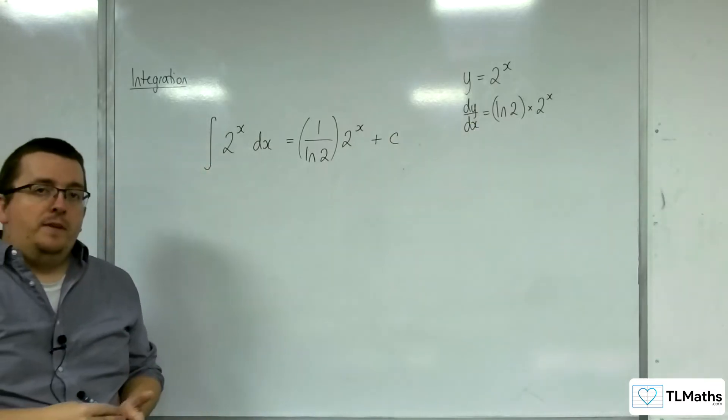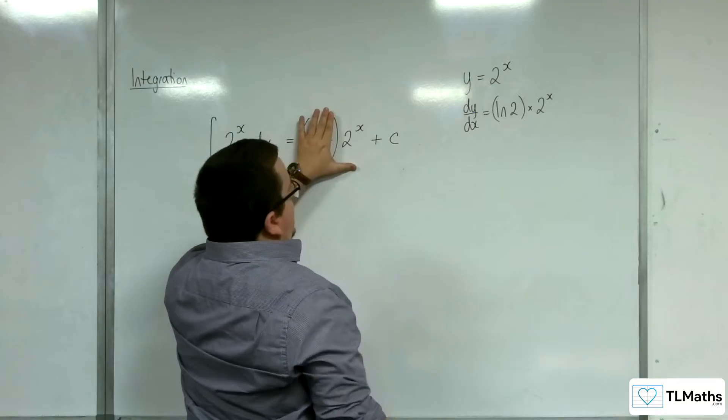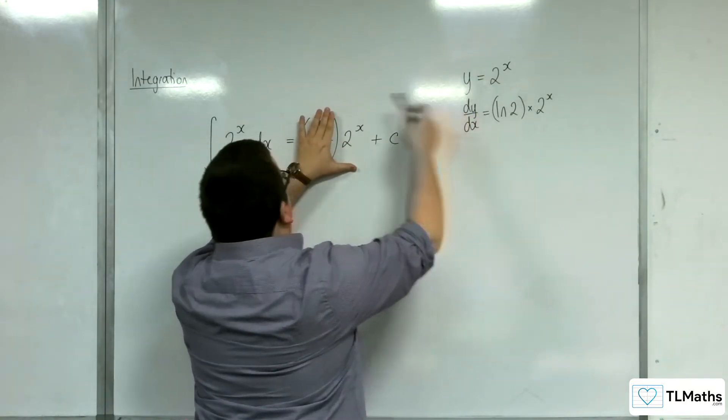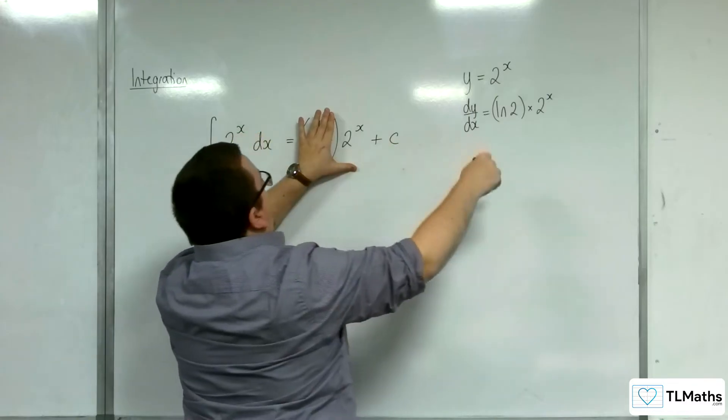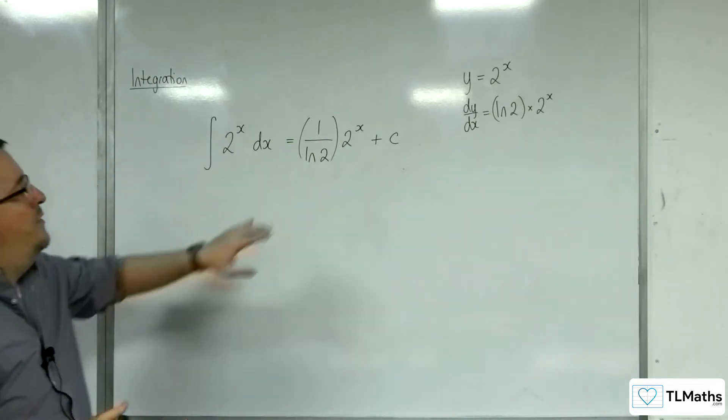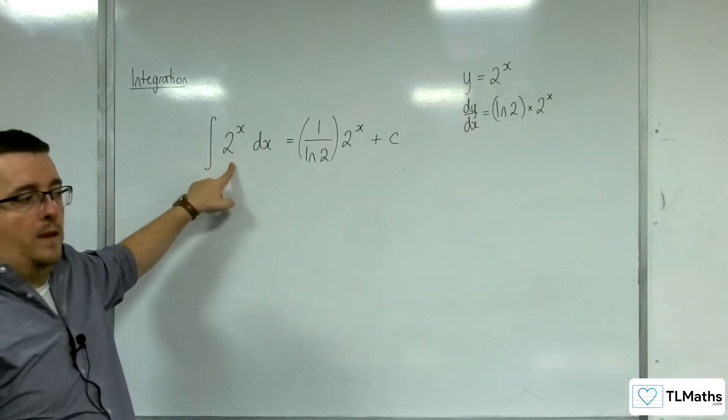Okay, because we know that if I differentiate 2 to the x, I get this, and I need to get back to that. So I'm going to need to divide by the log 2 to knock that log 2 out. This will differentiate back to this.